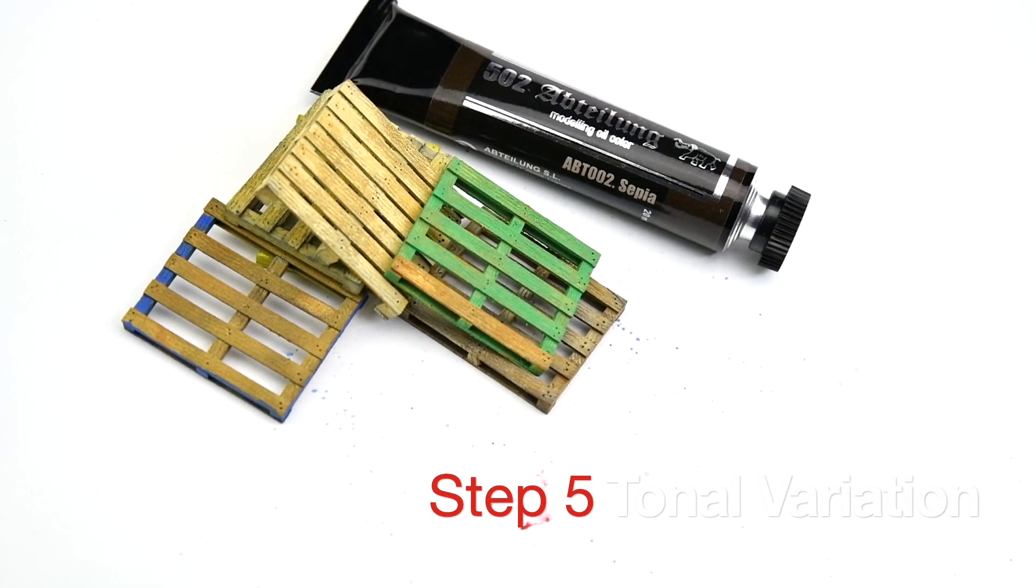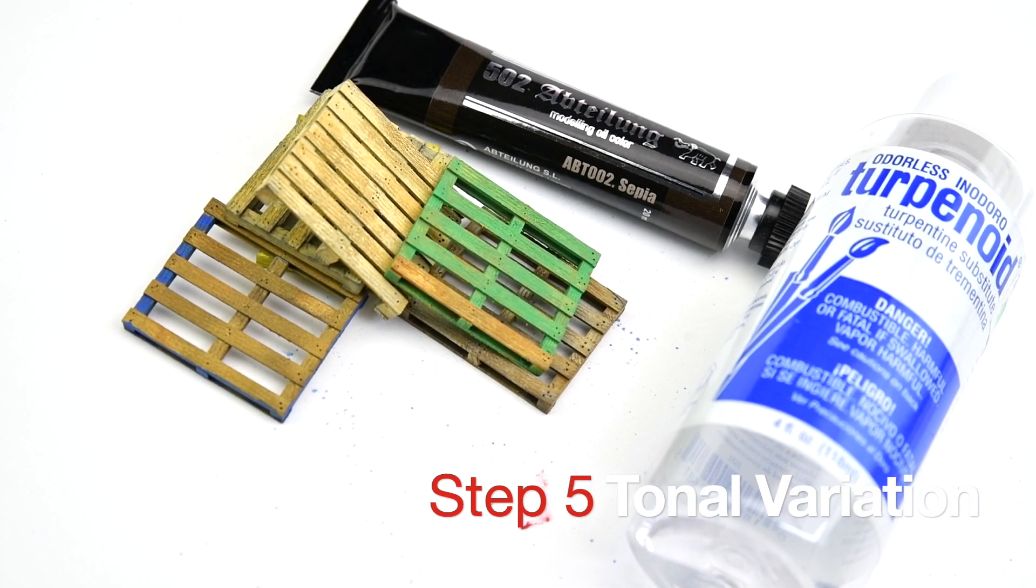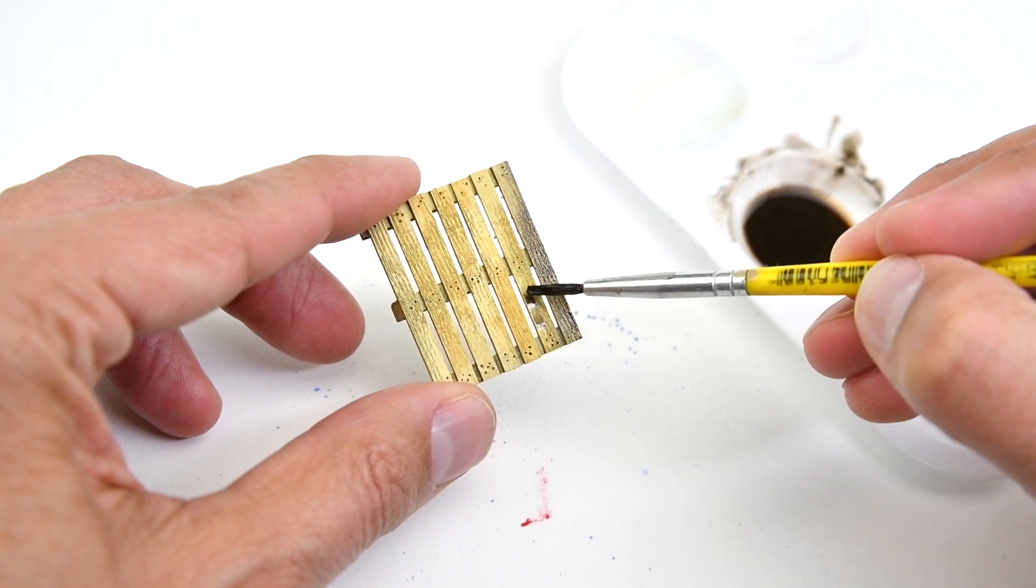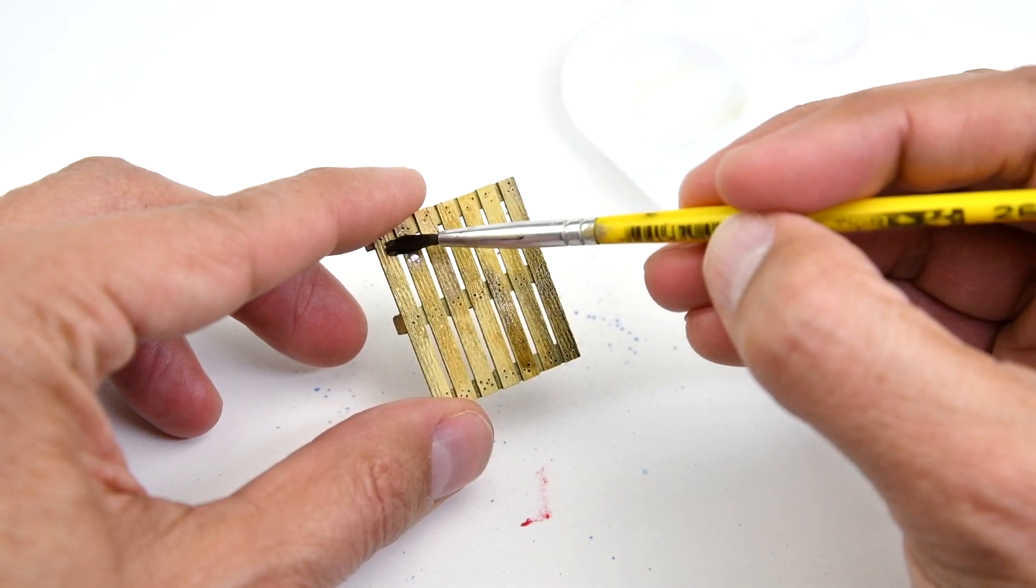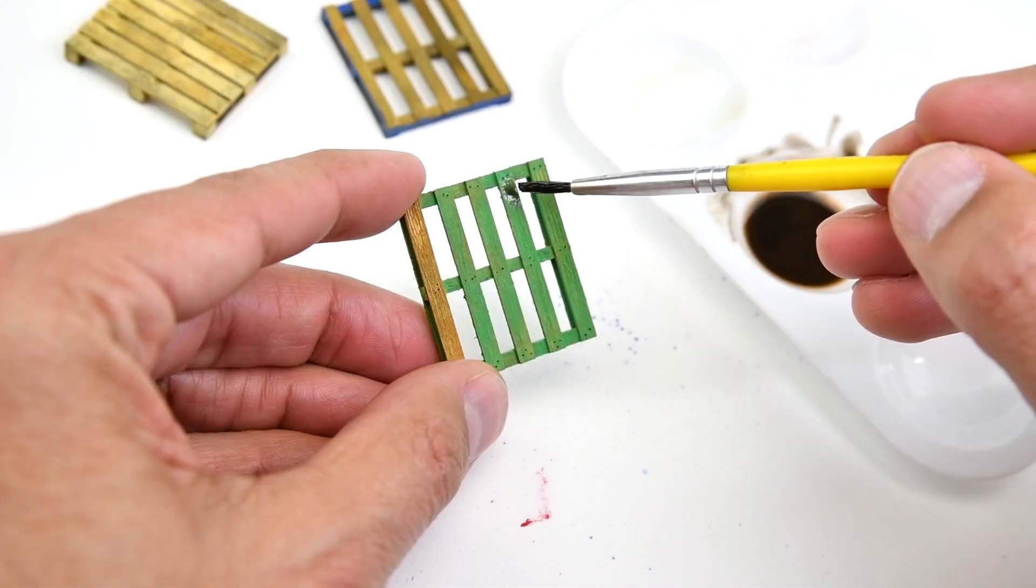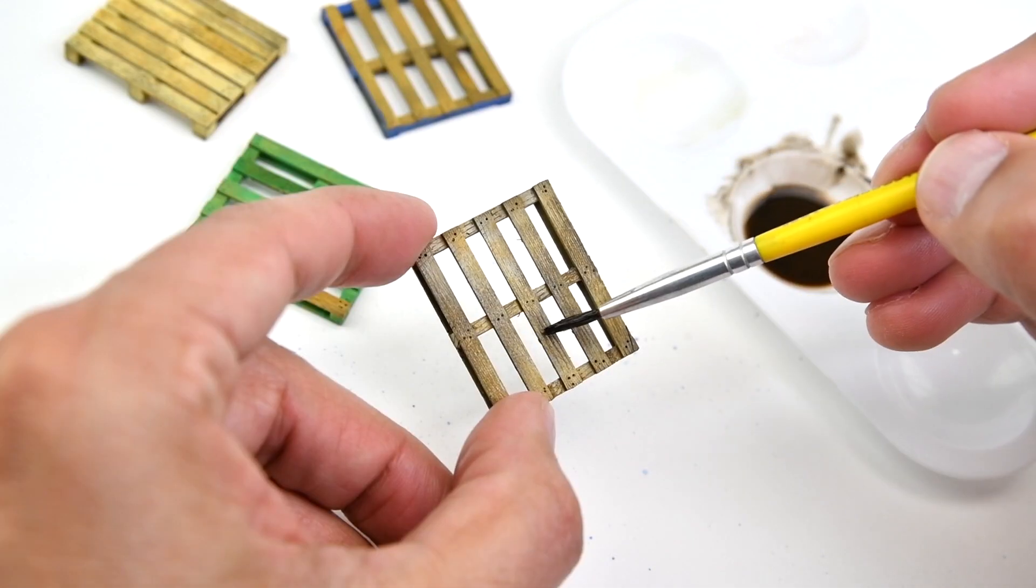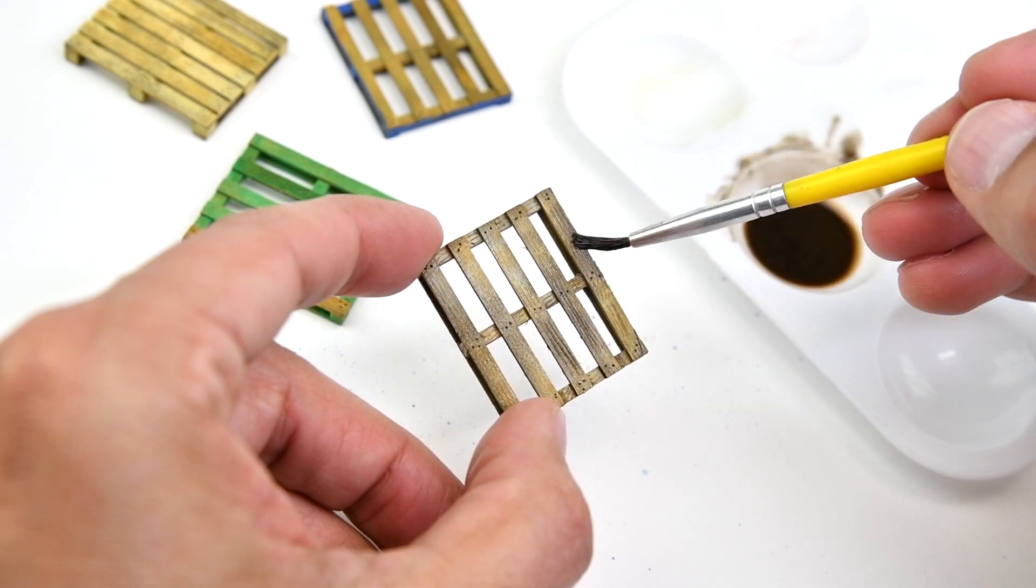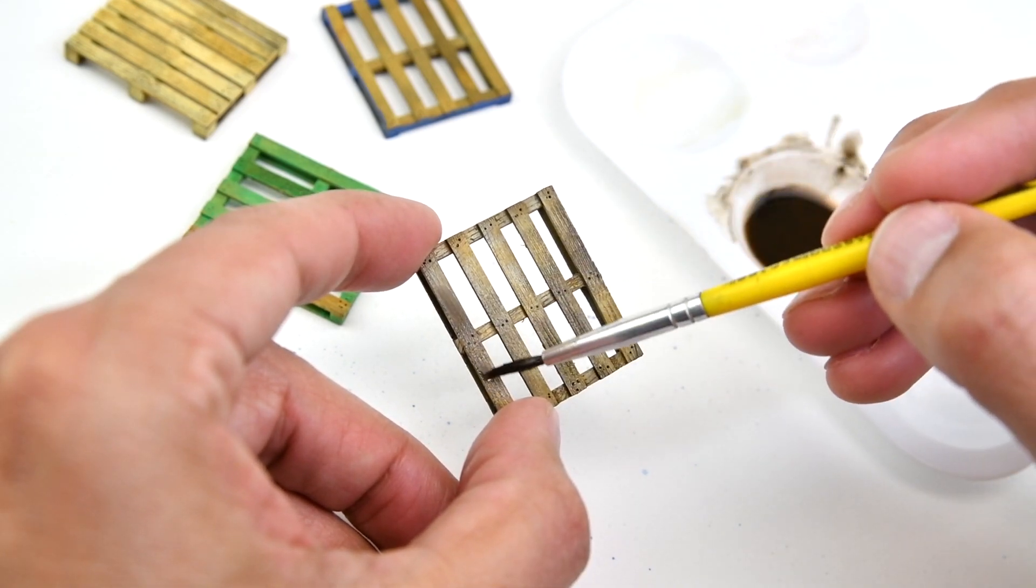The tonal variation phase gives the pallet a worn out or old look. Using a very diluted sapphire oil color, you can apply the mixture on the entire surface or on a few planks only. This makes the piece more interesting, adding a controlled tonal variation on top of the pinewood or colored pallets.